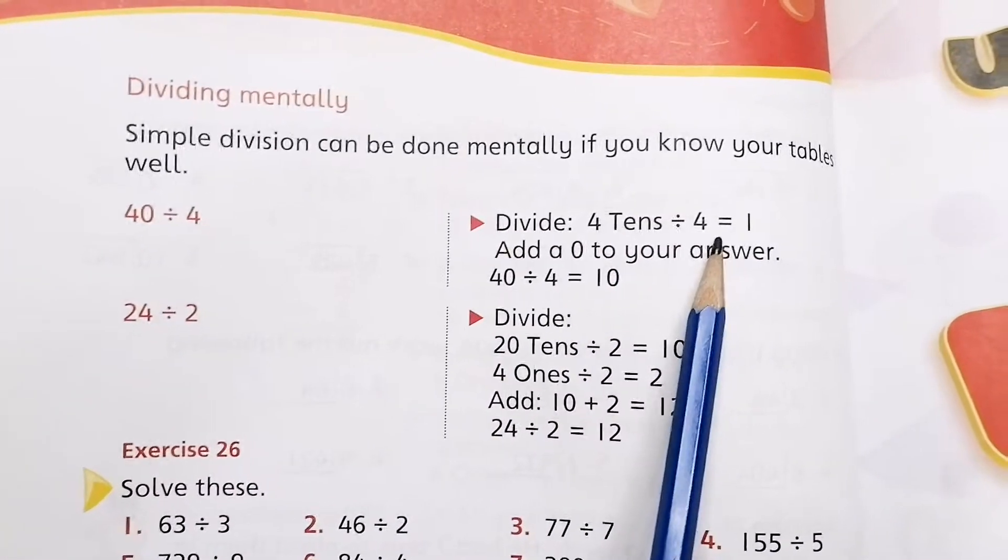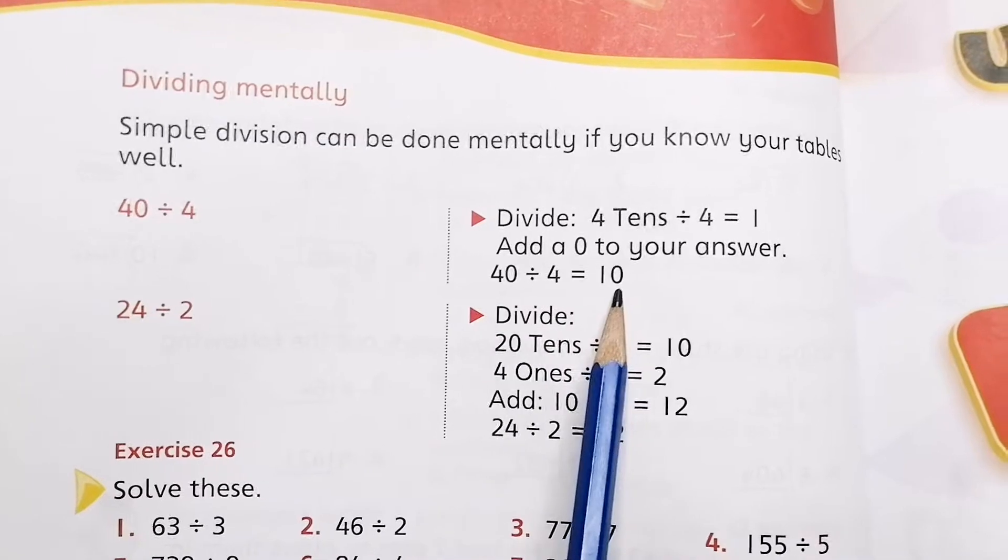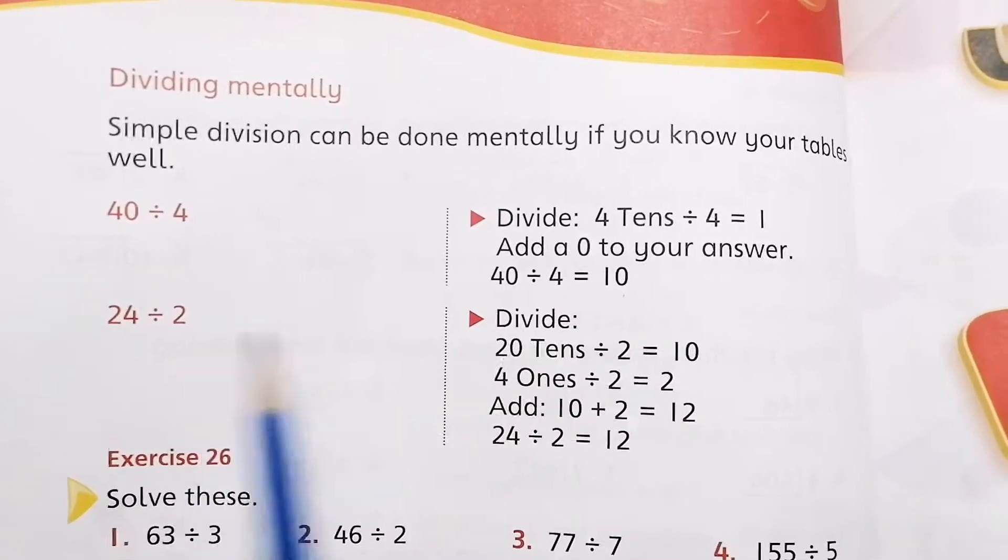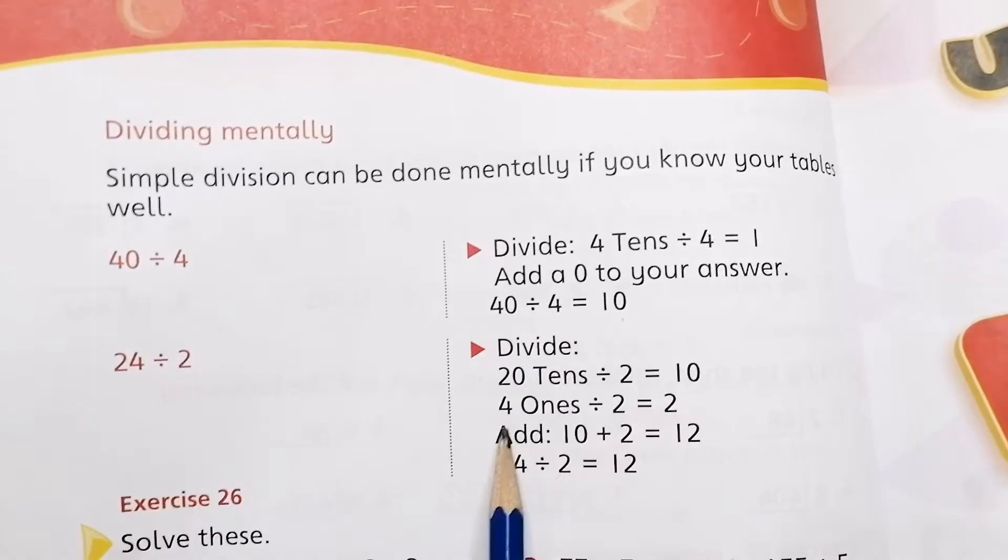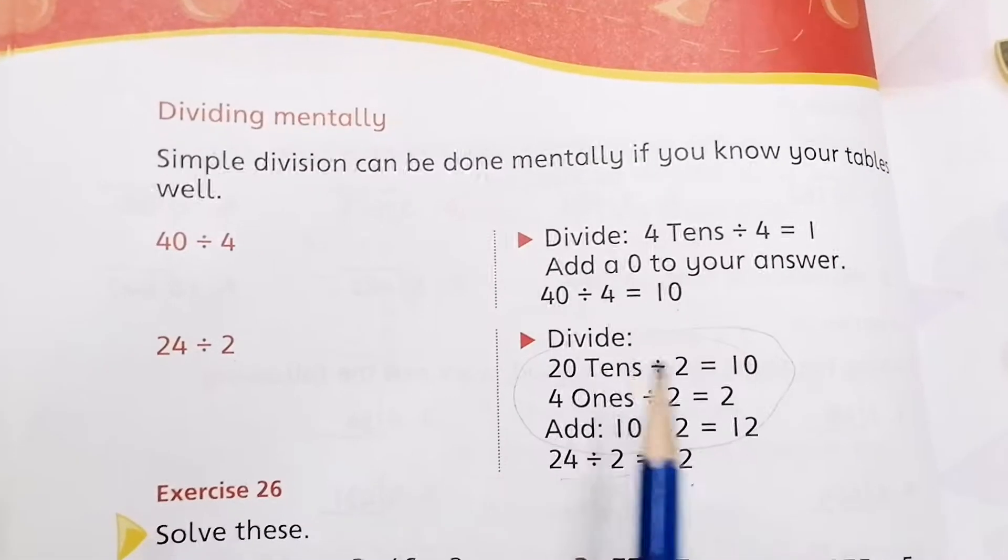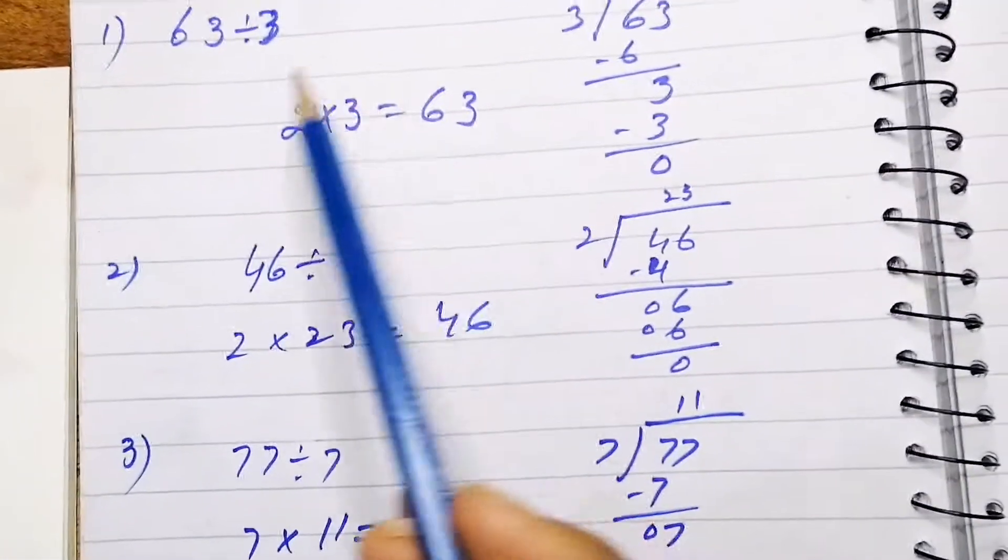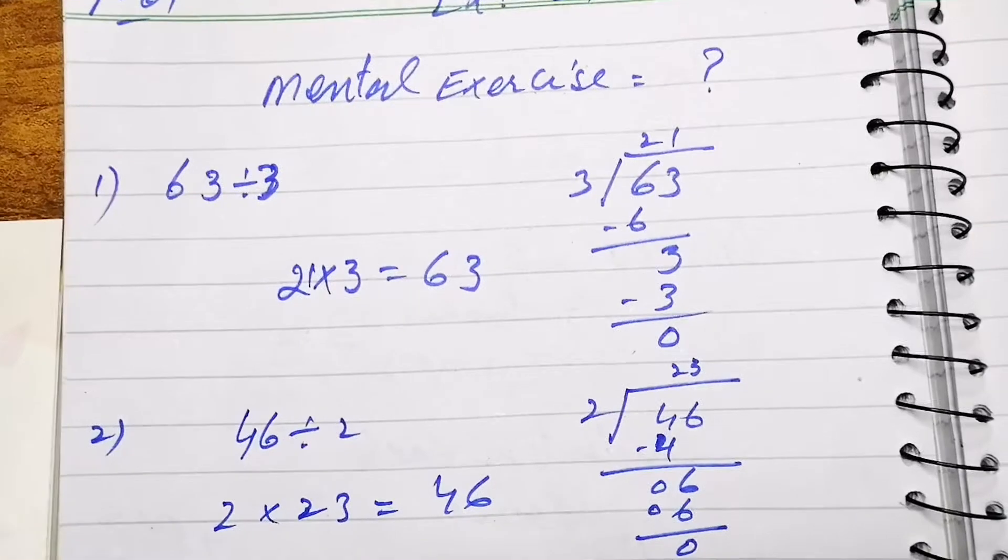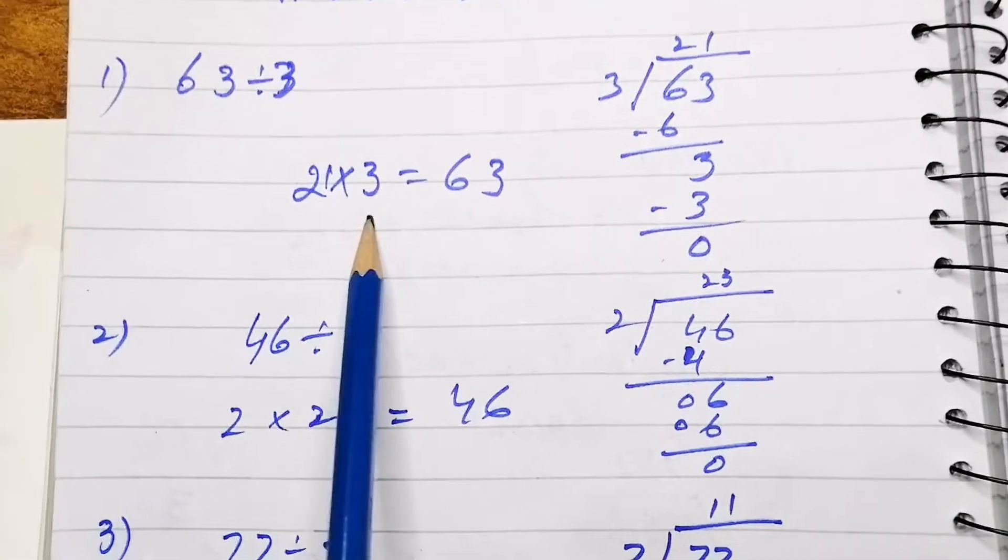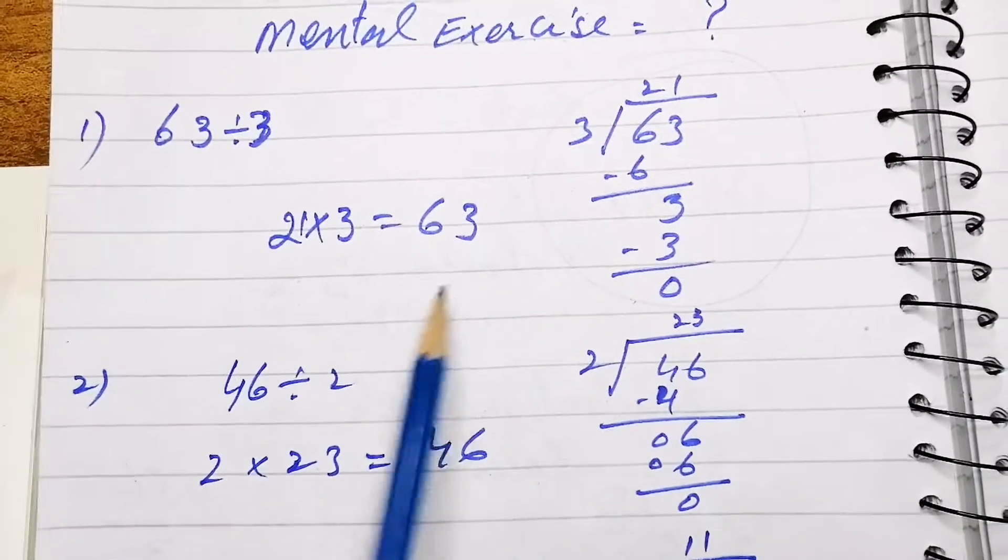Dividing 40 by 4: 40 divided by 4 is equal to 10. 24 divided by 2: 24 divided by 2 is equal to 12. You must know tables before or how to divide this. These are few I have done. 63 divided by 3 is equal to 21. 3 21s are 63. You can divide this way and also can check.